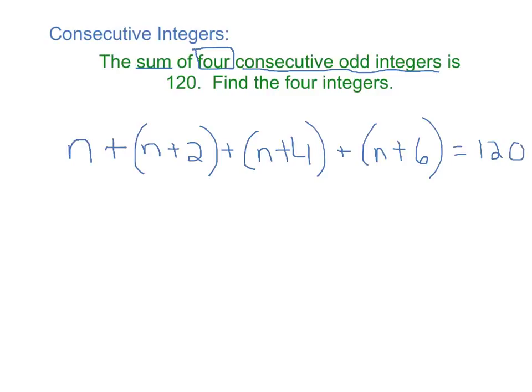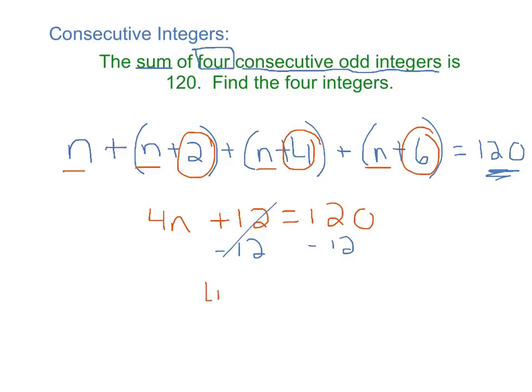So we want to figure out what 4 numbers that are consecutive odd integers, when you add them, gives you 120. So I wrote parentheses in just to keep things separated, but you actually do not need them. We can combine like terms. How many n's do you have? We have 4n plus 2 plus 4 plus 6 is 12. So 4n plus 12 equals 120. We can solve for n by subtracting 12 on both sides.